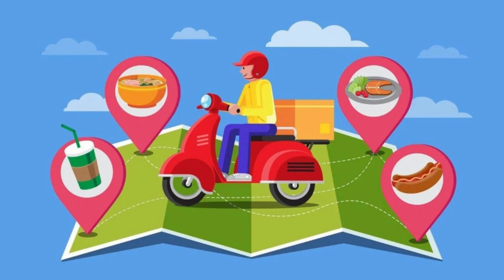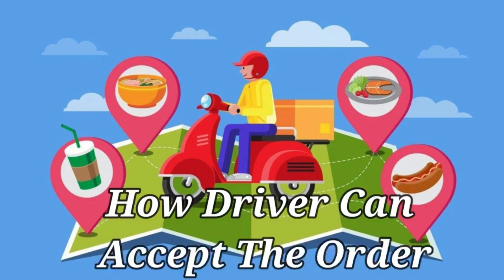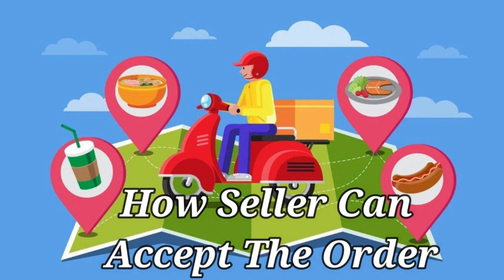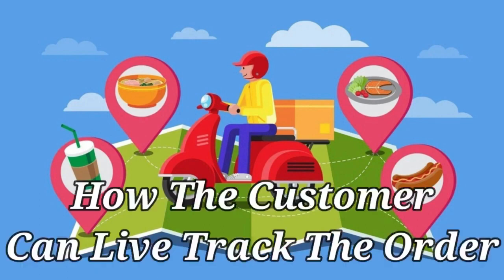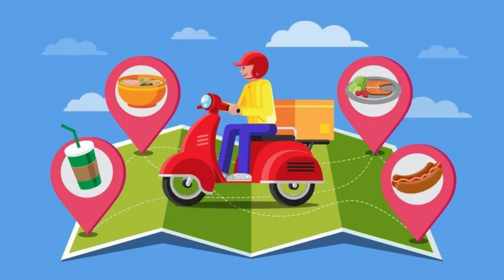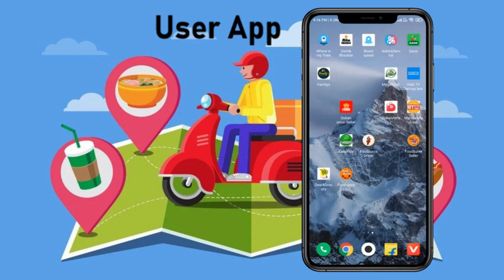Then this is the video for you. Today we are going to understand how our ready-made food delivery application, Food Onyx, works. By watching this video you will understand how a customer can order from a nearby restaurant, choose variations, pay online, how the driver can accept the order, how the seller can accept the order, how the complete order can be delivered, and how the customer can live-track the whole order. After watching this video you will be able to decide which of our food delivery applications you should go for. For more, you can contact your consultant.